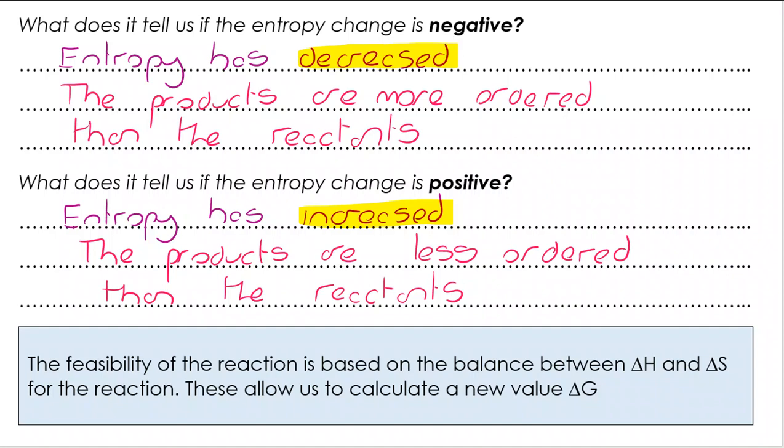So that's entropy in very simple terms. But we don't look at that really in isolation. We are going to need to look at the combination of delta H and delta S and also T to calculate a new value, delta G.